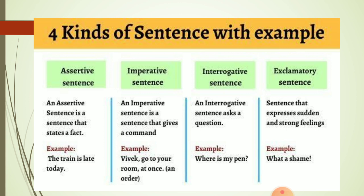An interrogative sentence always asks a question — for example, 'Where is my pen?' You can see the sentence ends with a question mark. An exclamatory sentence expresses sudden and strong feelings such as anger or happiness — for example, 'What a shame!' Notice it is not an interrogative sentence even though it starts with 'what'; it ends with an exclamation mark, so it is an exclamatory sentence.